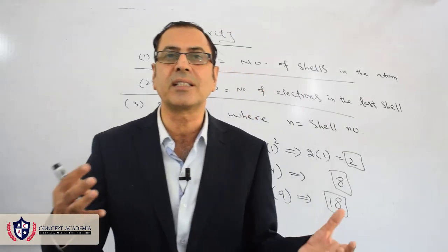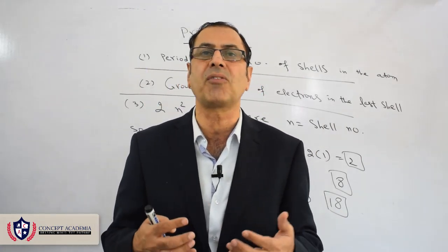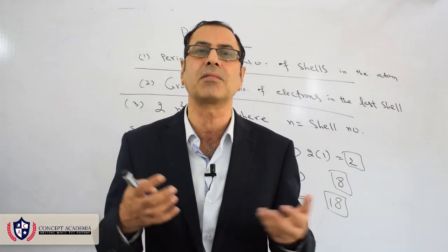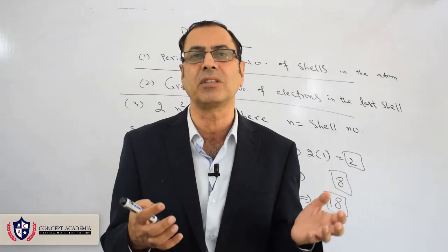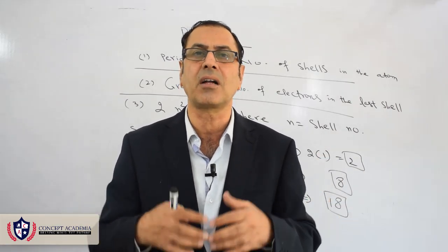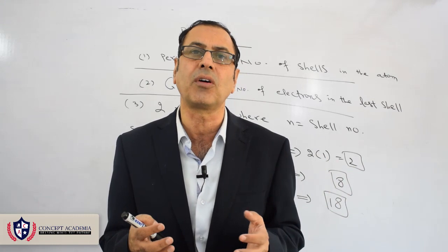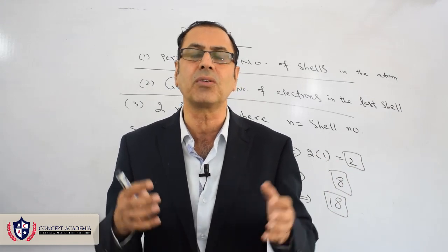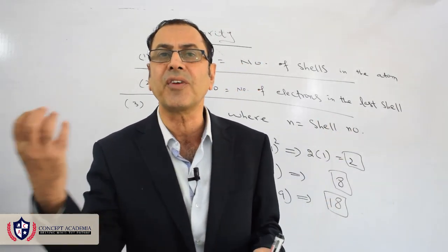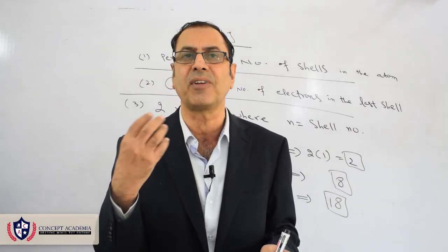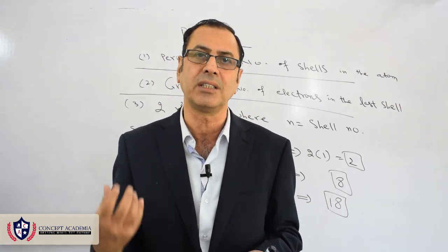We are discussing the arrangement of electrons around the nucleus. The arrangement of electrons around the nucleus is called the electronic configuration. Electronic configuration is the arrangement of electrons in various shells around the nucleus.